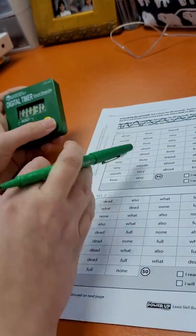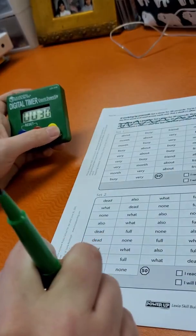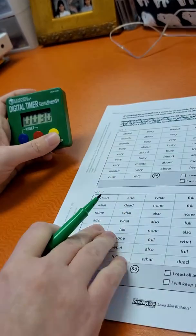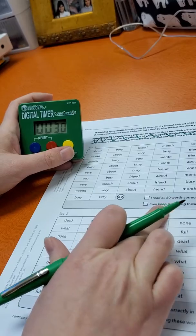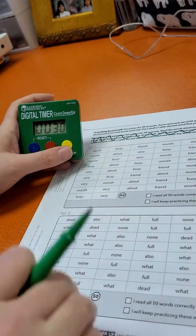You're going to set your timer, and then you're going to read across. And wherever you get to, you're going to put a slash afterwards. Then you're going to say, I read all 50 words correctly in 30 seconds, or I will keep practicing. And you're going to do that for each set.